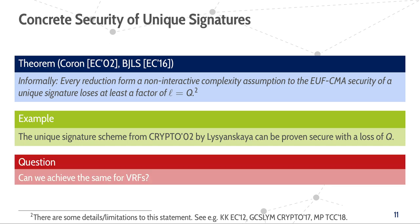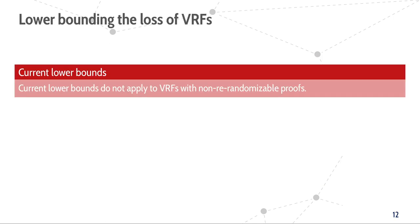The question now is, is the situation for VRFs similar or different, and if it's different, how different is it? And indeed what we find is surprising, namely, we find that the current bounds only apply to VRFs with re-randomizable proofs pi and not to all VRFs. More precisely, it only applies to VRFs that have unique or re-randomizable proof pi.